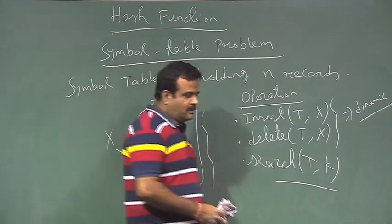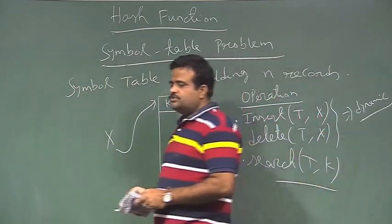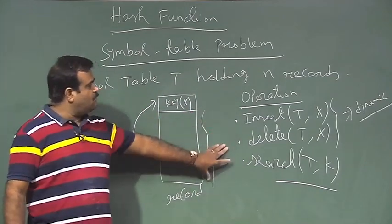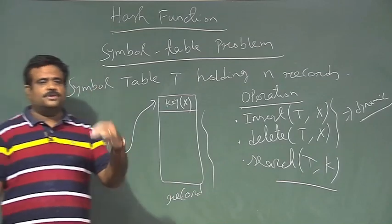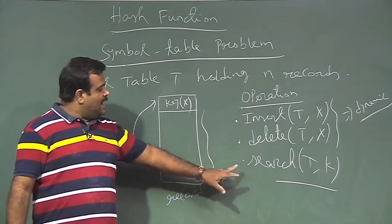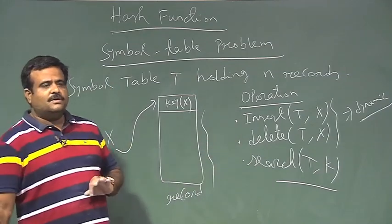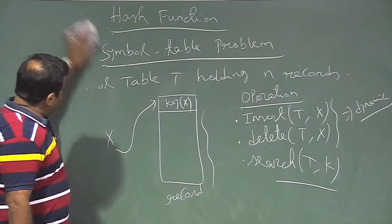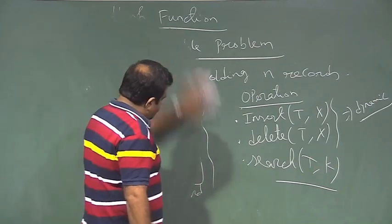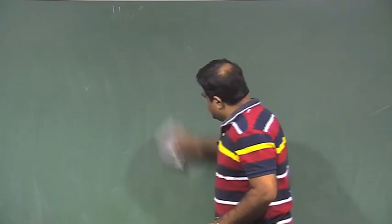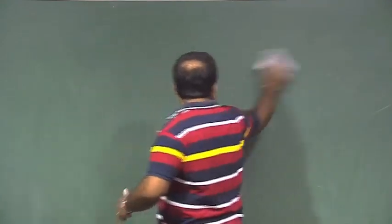This is the symbol table problem. We need to store n records in such a way that we can perform insert, delete, and search operations efficiently. Let us think about what data structure we can use. Let us start with a very simple but very powerful data structure — a simple array — which is called the direct access table.